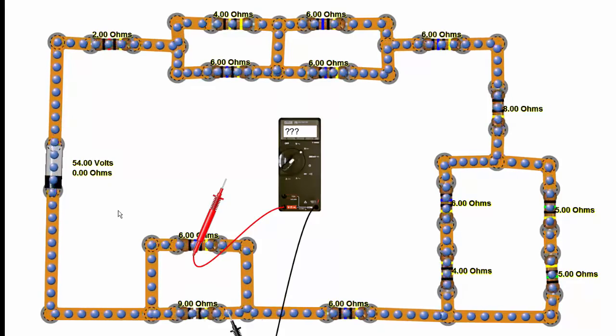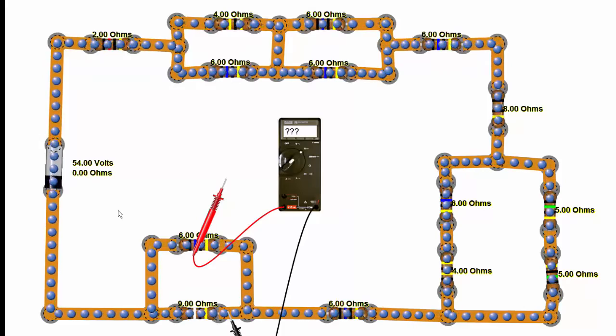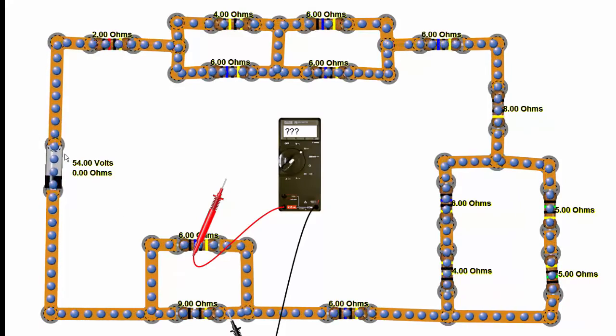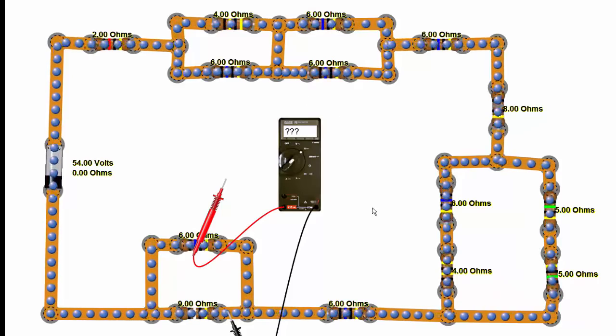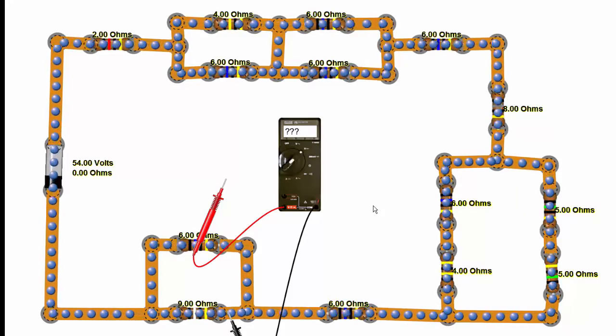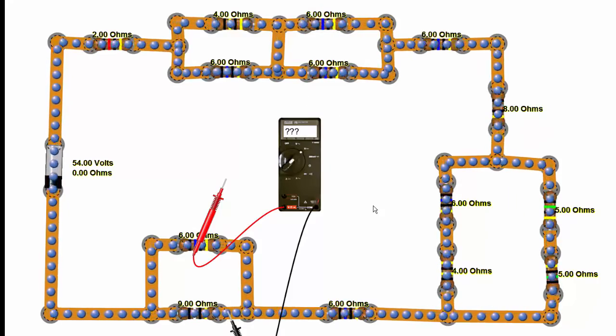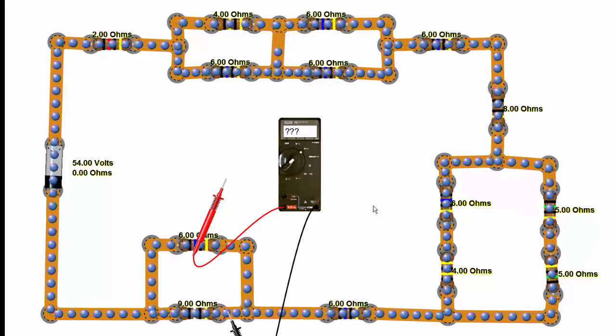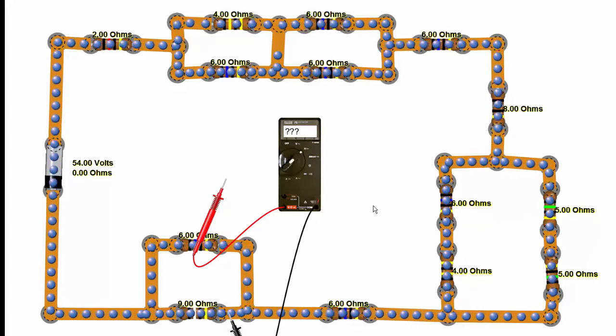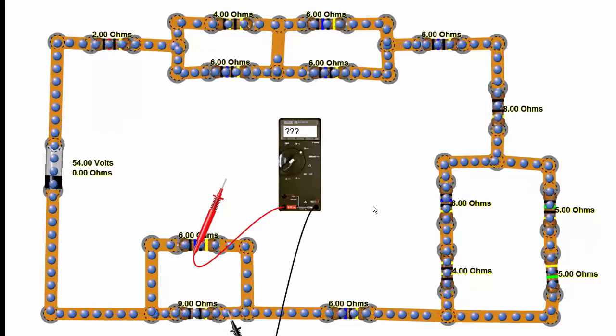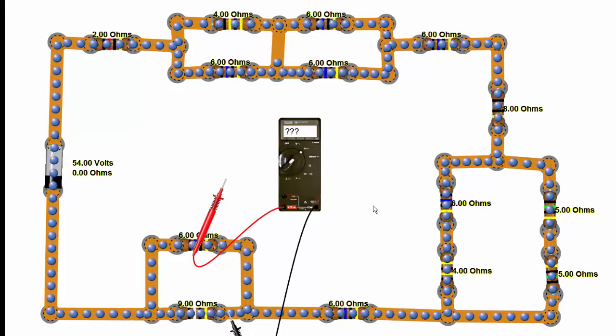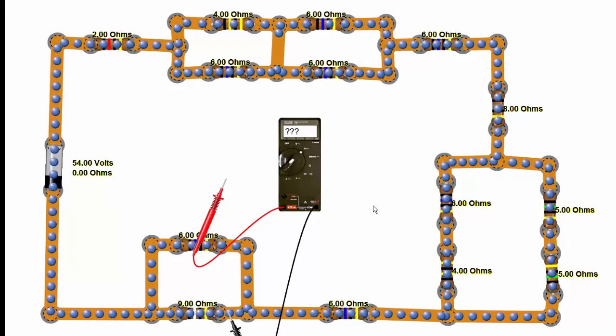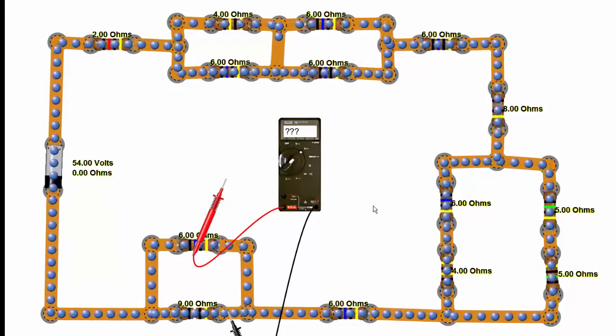Kirchhoff's Voltage Law basically says that the sum of the voltages in a loop, and this whole circuit is one loop, but the sum of those voltages has to equal 0. Another way of looking at the law is that the sum of the voltages in the load section of a circuit, in other words all the resistors, the sum of all those voltage drops has to add up to the supply voltage, which in this case is 54 volts.